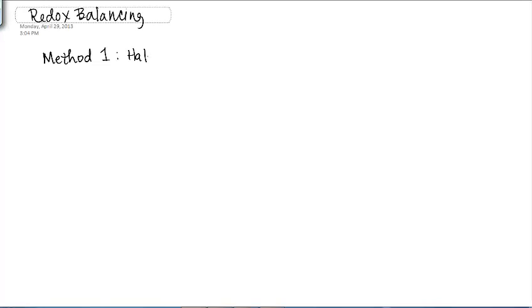So in method one, that was the half reaction method. That's the one where you follow the rules that are given in your book, and you guys have to be familiar with them. You're going to have to memorize those rules. Once you get them memorized, you can balance really fast. This method is going to be method two that I'm going to show you. And this is the oxidation states method.